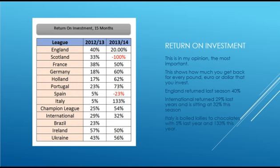The standout story is Italy — last year returning at 5%, and this year so far it's running at 133% return for every pound, dollar, or euro invested. Return on investment is important. Some systems give you a high point score, but you've had to outlay an absolute fortune to get those points. Here you can see that we are not outlaying a lot of money to get good return on our betting in Global Soccer Goals.